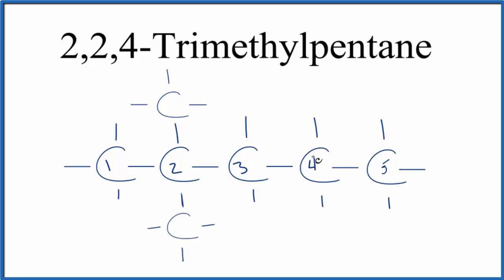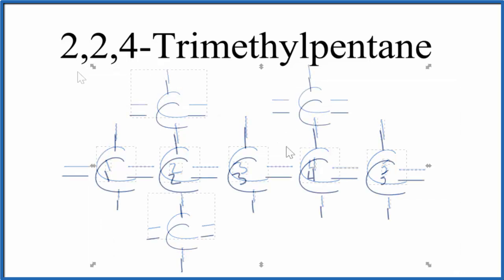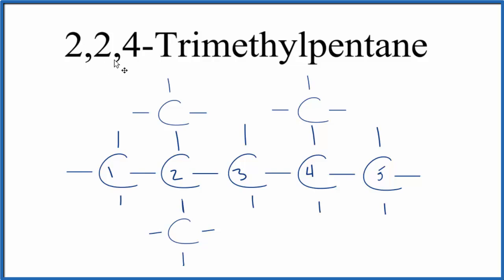Put one on the fourth carbon here. Let's move this down just a little bit. And this is the structural formula for 2, 2, 4-trimethylpentane. It's also called isooctane. Keep in mind that each carbon will have four bonds.